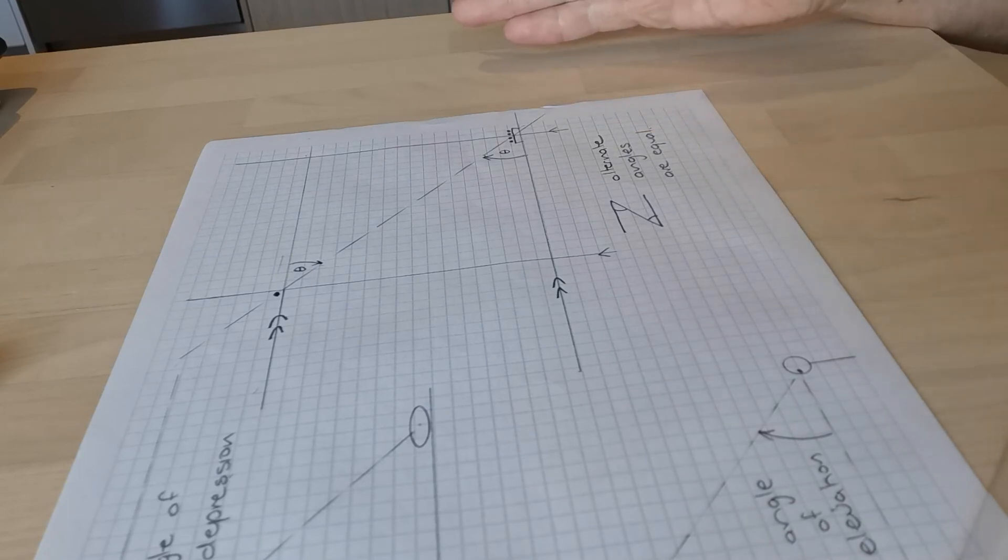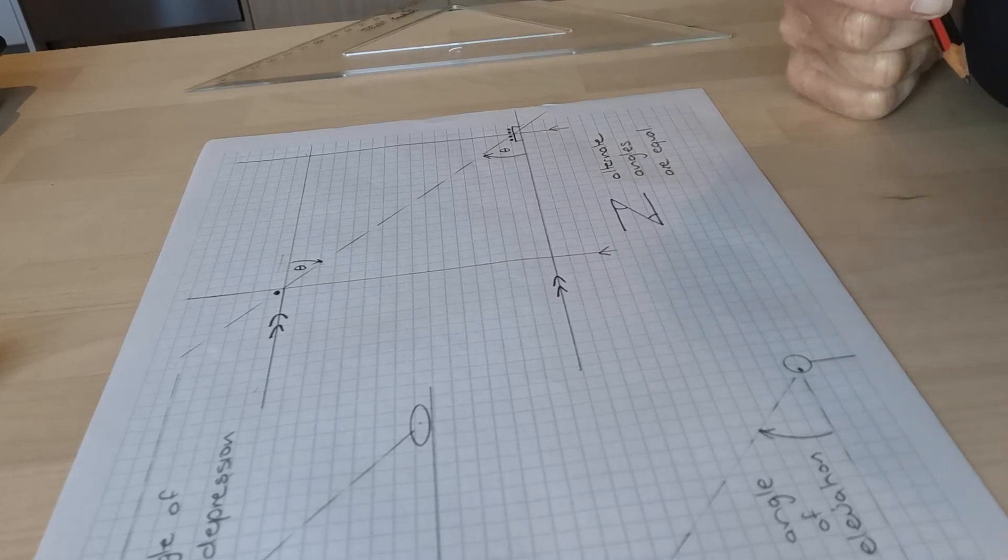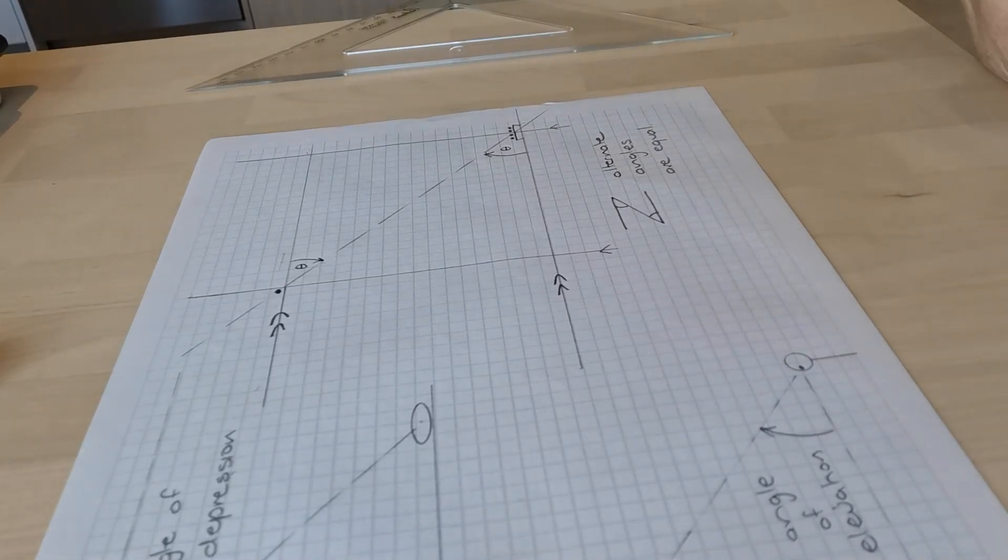So these are words that are used to describe angles that happen in a vertical plane and in the next tutorial I'll talk to you about some angles that happen in the horizontal plane. Thanks for listening. Bye for now.